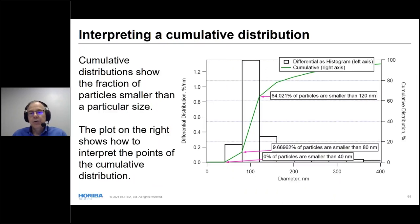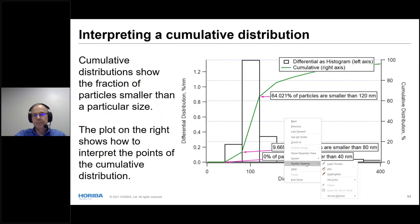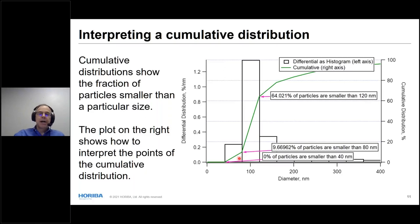When you have a cumulative distribution, interpreting it can be a puzzle if you're not used to it. The green line goes with the right axis, starting at 0% and going towards 100%. For example: where the line is still at zero, none of the particles are smaller than 40 nanometers. At 9.67%, particles are smaller than 80 nanometers. At 64%, particles are smaller than 120 nanometers. And you can interpolate: 40% of the particles are smaller than 105 nanometers. The slope of the cumulative line corresponds to the height of the histogram bins.